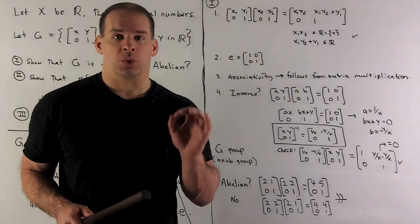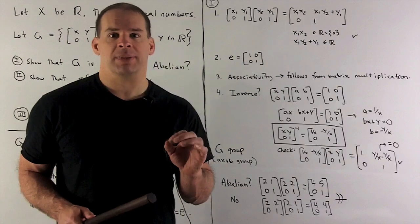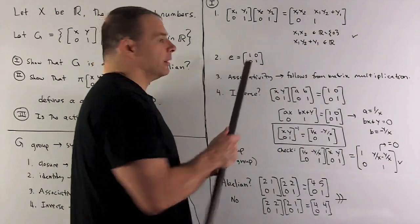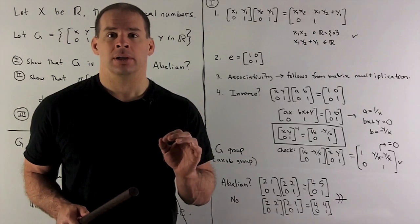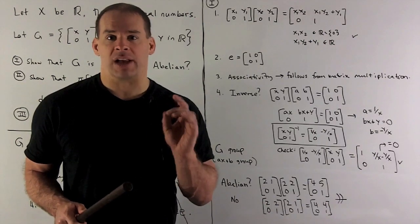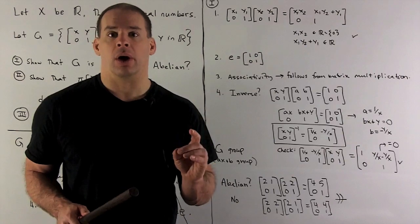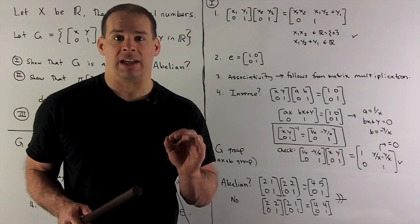Identity. Since we're looking at two by two matrices, the identity is going to be one, zero, zero, one. The only thing we need to check is that it lives in our group. That's going to be the case if we let X be equal to one, Y be equal to zero. So we have our identity in the group.